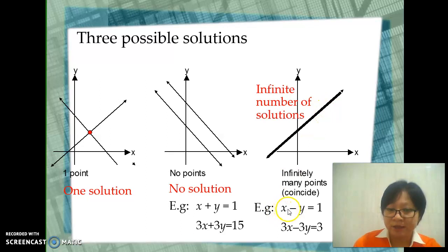Here is an example: x minus y equals 1, and 3x minus 3y equals 3. If you simplify the second equation by dividing all terms by 3, you get x minus y equals 1. So they are identical, which means they coincide and the graphs are on top of each other.